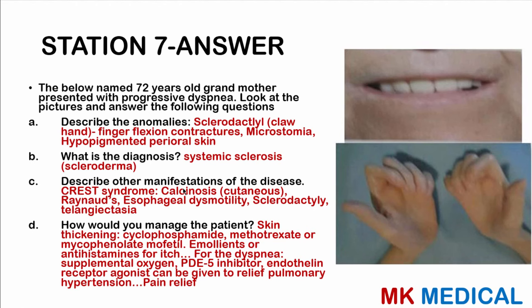How would you manage the patient? For skin thickening, give cyclophosphamide, methotrexate, or mycophenolate. Emollients and antihistamines may be given if there is itch. For the dyspnea, give supplemental oxygen; we may give phosphodiesterase type 5 inhibitors. We may also give endothelin receptor antagonists to relieve pulmonary hypertension. For pain relief, give standard analgesia according to the WHO pain ladder.